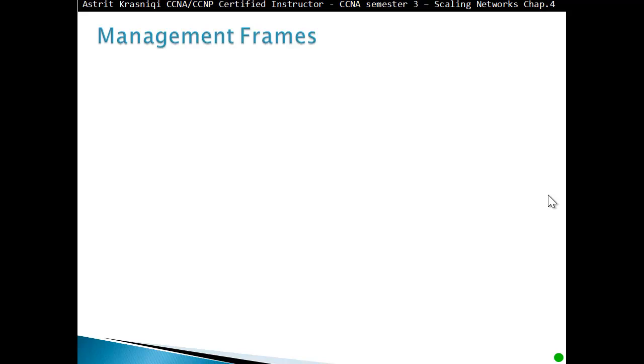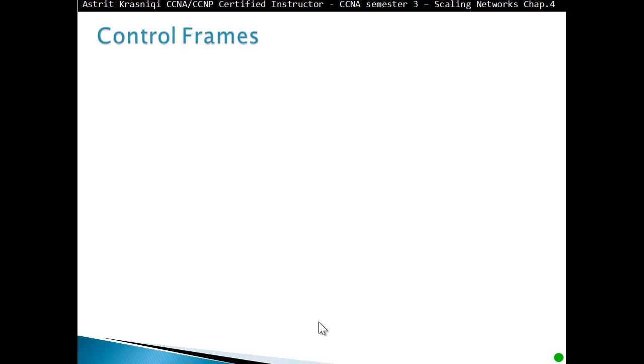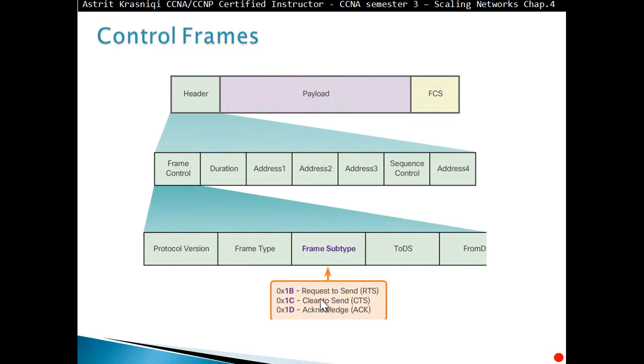In the management frame subfield, we can have association request frame, association response frame, re-association request/response, probe request/response, beacon frame, disassociation frame, authentication and de-authentication fields. On the control frame subtype we can have request to send (RTS), clear to send, or acknowledged.